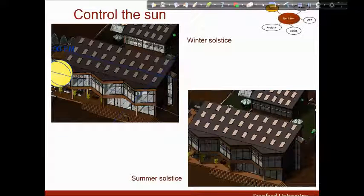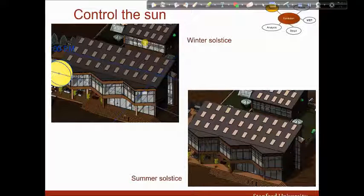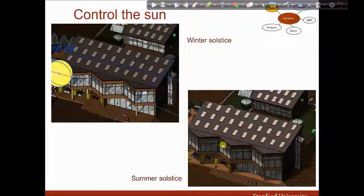My effort to control sun with overhangs is shown in these two pictures. At noon at winter solstice, I need the sun to heat my building and drive my cooling loads down. This is why I allow most of it to enter the building and provide passive solar heating. However, at noon at summer solstice, I do not need heat anymore so I prevent sun from entering the building in order to reduce the cooling needs. You can see that both the front and the back side of my building are shaded.